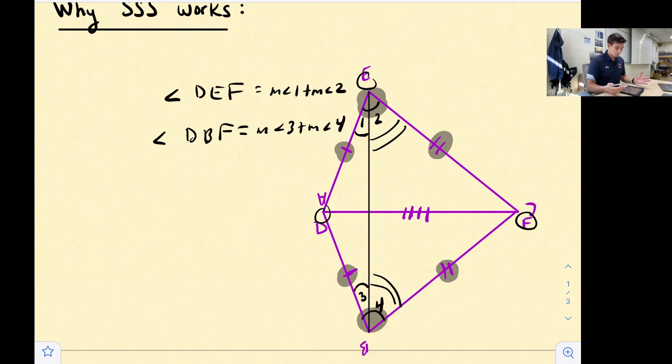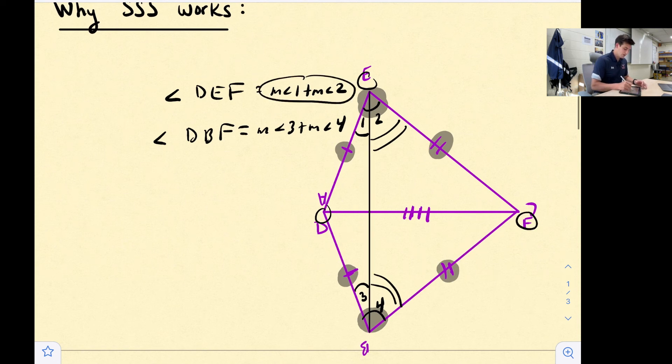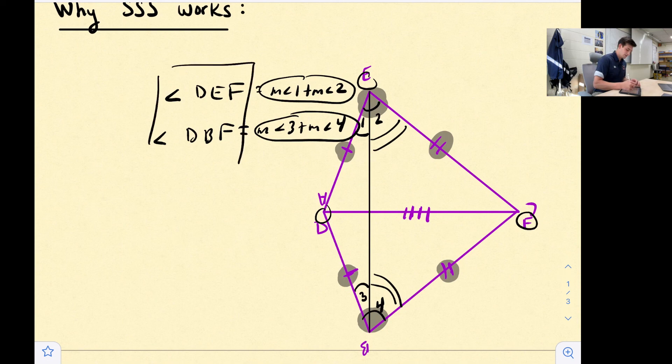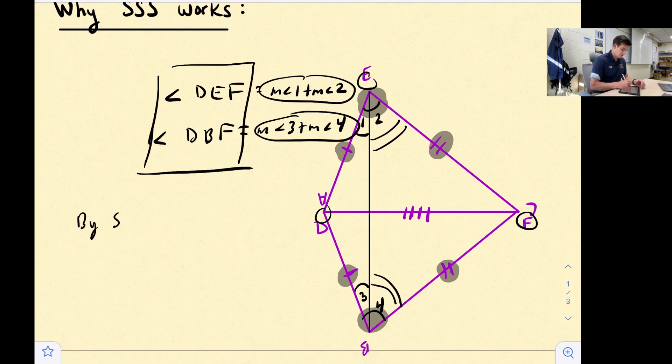So now let's look at a little bit of substitution here. If angle 1 is congruent to angle 3 and angle 2 is congruent to angle 4, then we can say these two expressions are equal to each other, therefore proving that these two angles are in fact congruent, which means they have the same measure. And so now we can say, actually by the Side-Angle-Side theorem, these two triangles are congruent. So triangle ABC is congruent to triangle DEF.